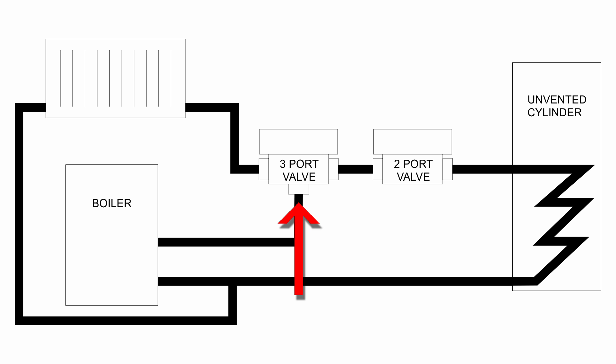One outlet goes to the radiators, just got one radiator shown there, and that returns to the boiler. And then the other outlet goes to the hot water cylinder, and again that returns to the boiler. So that's the sort of basic setup, and the two port valve actually goes, as shown here, on the outlet of the three port, so it's essentially between the three port valve outlet and the input to the cylinder.